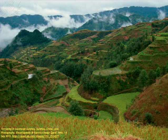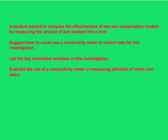Terracing is an important strategy in soil conservation. A student wanted to compare the effectiveness of two soil conservation models by measuring the amount of soil washed into a model river. Suggest how he could use a conductivity meter to collect data for this investigation, and list the key controlled variables in his investigation.